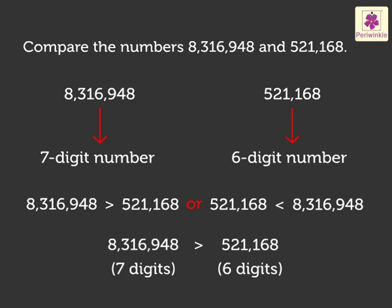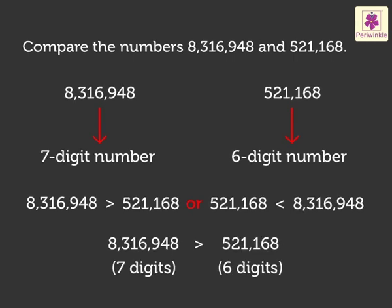Hence, when we compare two or more numbers with different number of digits, the number with the most number of digits is the greater number, and the number with the least number of digits is the smaller number. Now, let us solve another example.